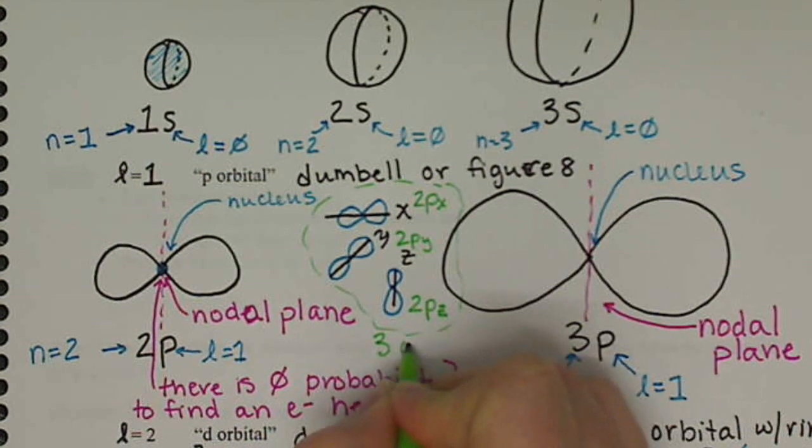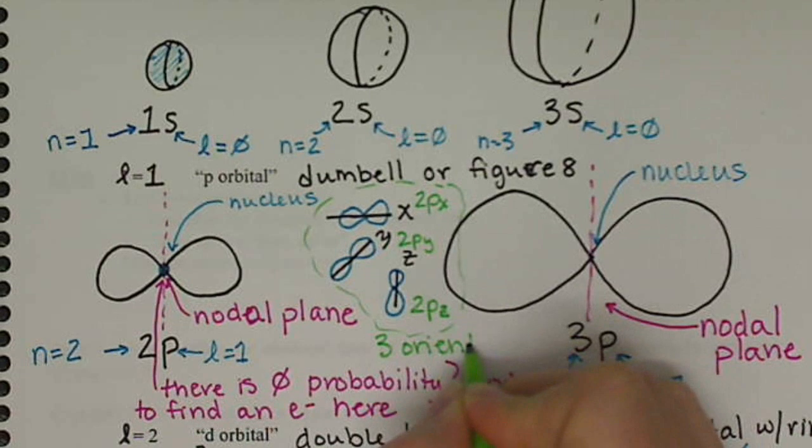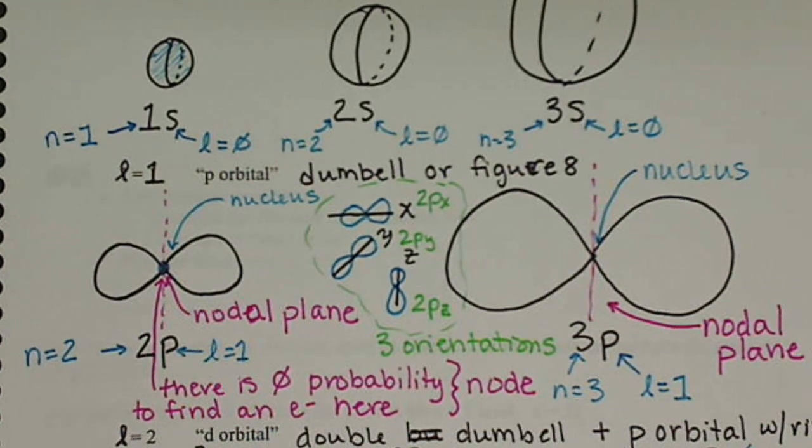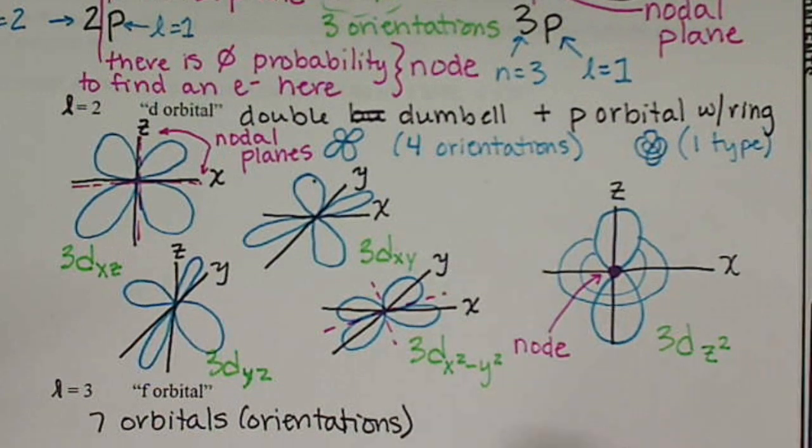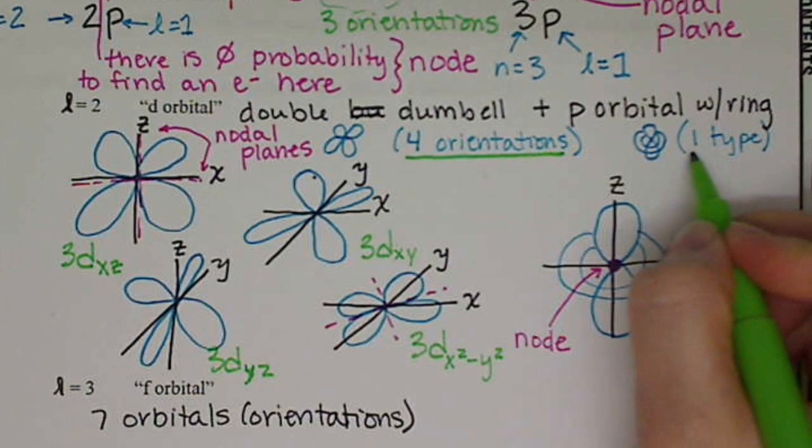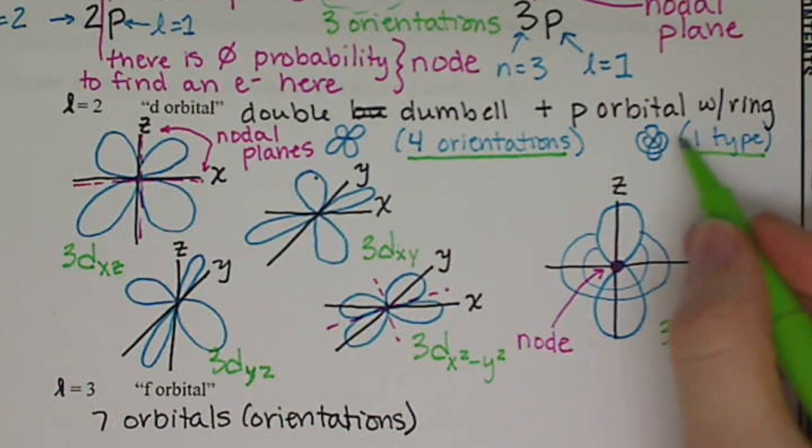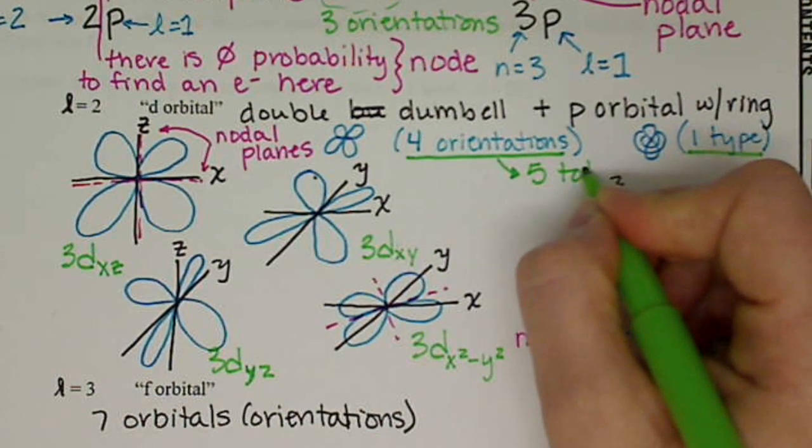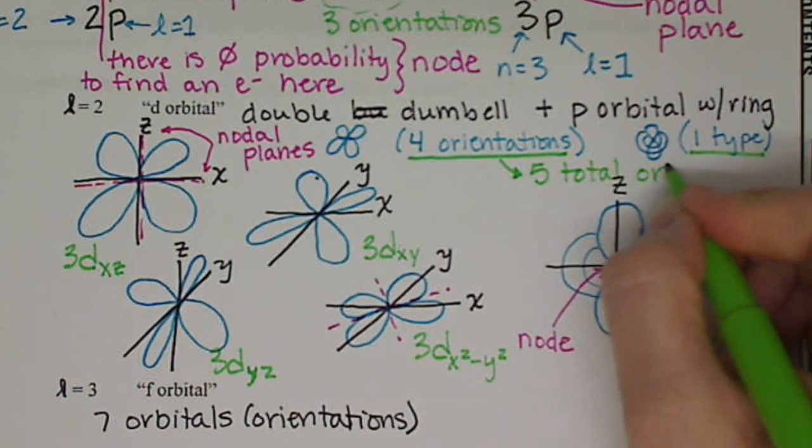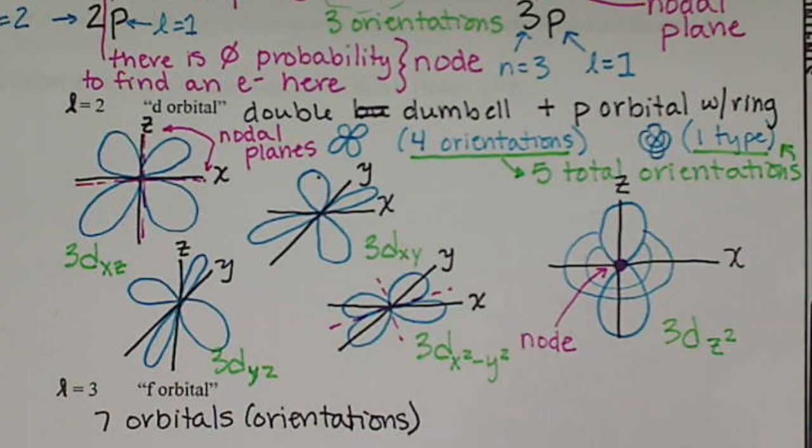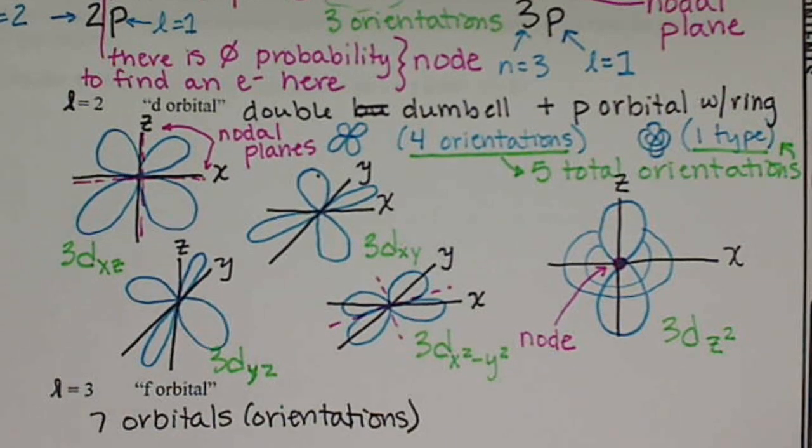So these are the three orientations. Now remember, we had already talked about orientations with our d orbital, and we have four orientations plus one other funky type. So we should have five total orientations, which means we should have five m sub l values.